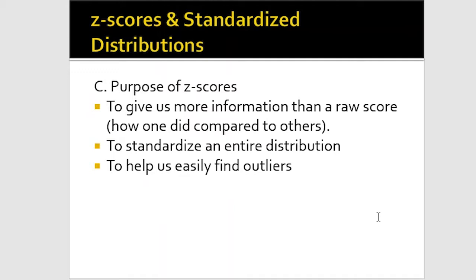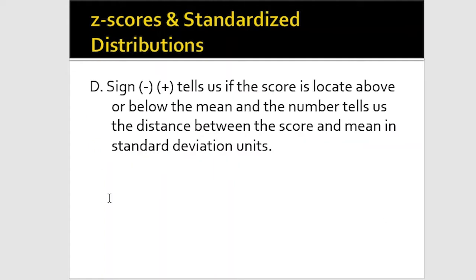The purpose for this gives us more information than a raw score would and helps us to standardize an entire distribution so we have a sense right away of how a person did on it. It also allows us to see outliers really quickly. If you have a z-score of six, you know that's an outlier, that's six standard deviations above the mean, that's a very extreme score. The sign from a z-score: a negative number tells us it's below the mean, a positive number tells us it's above the mean. If it were zero, that means you scored just at the mean. The number tells us the standard deviation units, the difference between the score and the population mean.